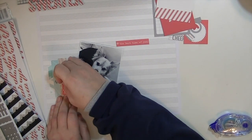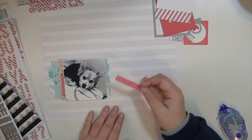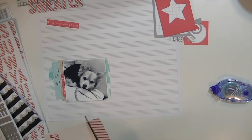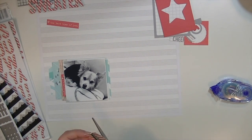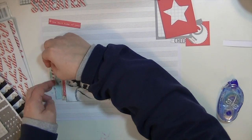And I also went through all the ephemera and everything that comes in the kit to find some red pieces and I'll end up putting a big tag on the top right hand corner and then this little striped paper from one of the 3x4 cards.